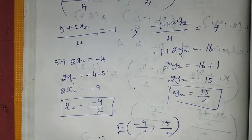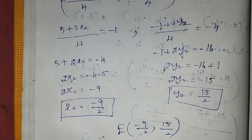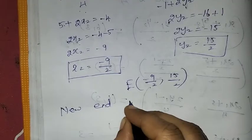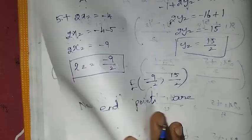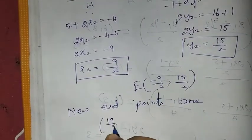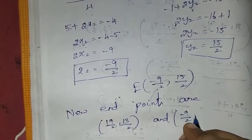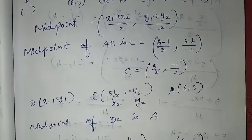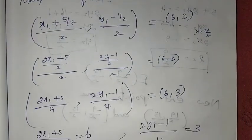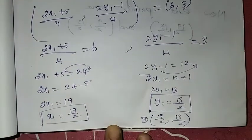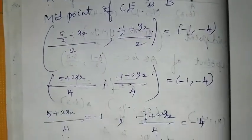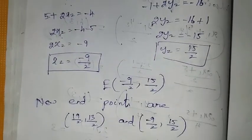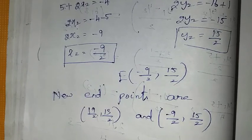So the answer: the new end points are (19/2, 13/2) and (-9/2, -15/2). The midpoint formula is easy to use. You can also try using the distance formula. Thank you so much for watching, students.